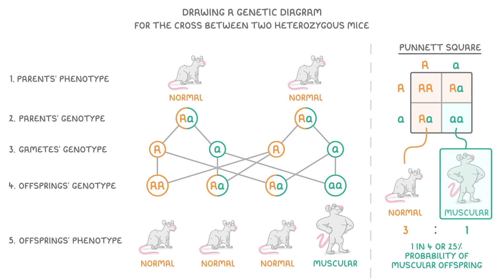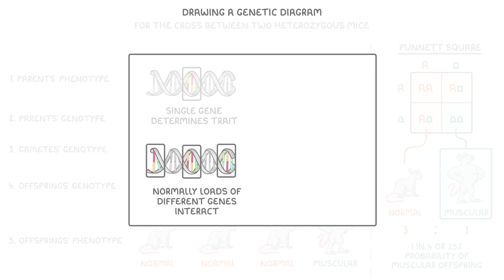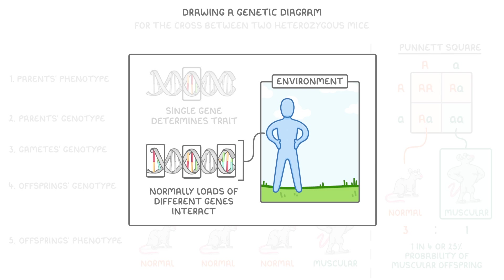Although we've been discussing how a single gene determines a particular trait, it's important to remember that normally loads of different genes interact, and the outside environment can also play a big part. For example, you might have loads of different genes that code for being tall, but if you didn't get enough food or sleep as a child, then you'll probably still end up being short.